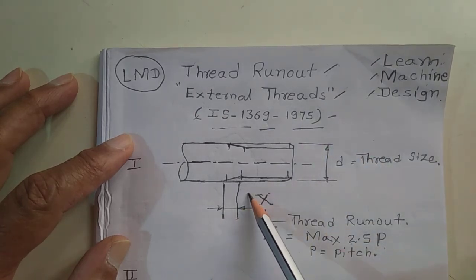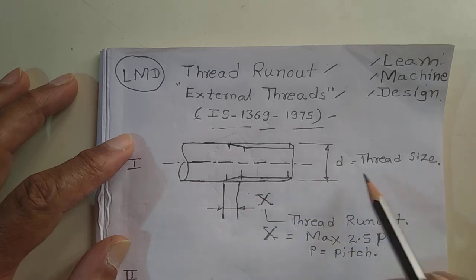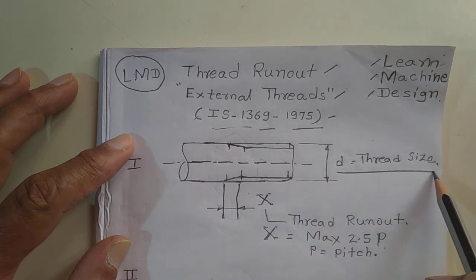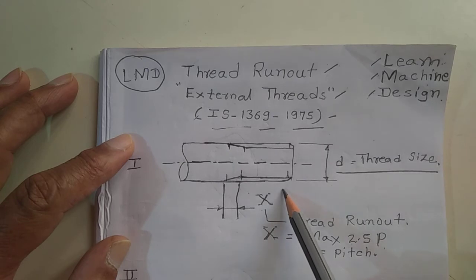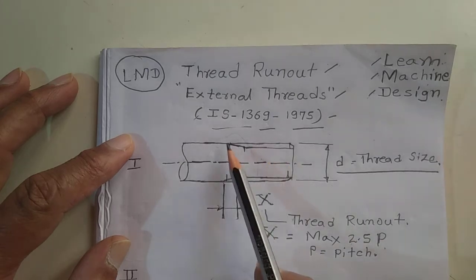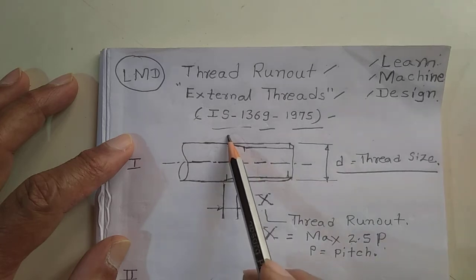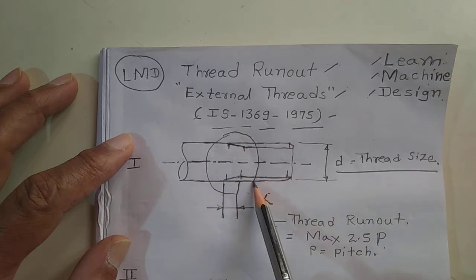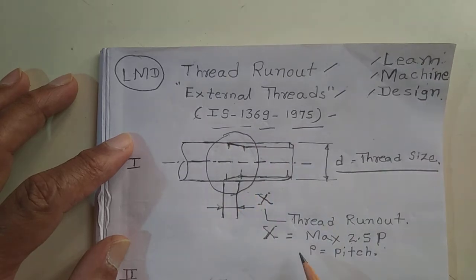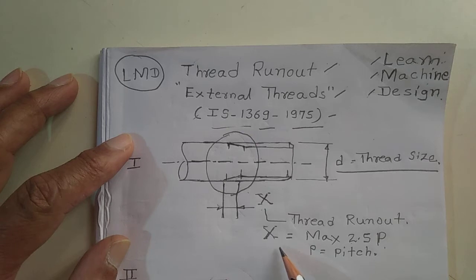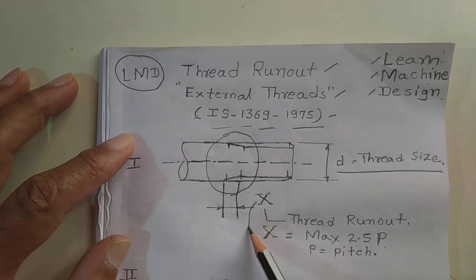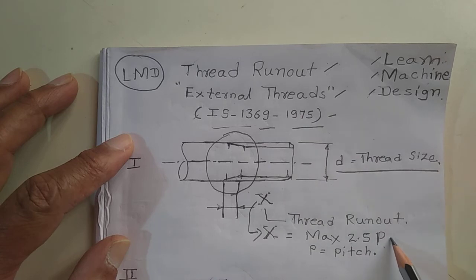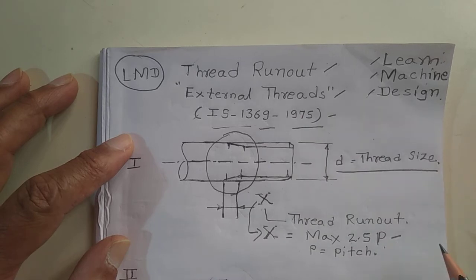Refer this figure — D is the thread size of the shaft. In this figure, this portion of the thread is called Thread Runout. This should be maintained as per the standard. Normally this X dimension should be 2.5 times the pitch.